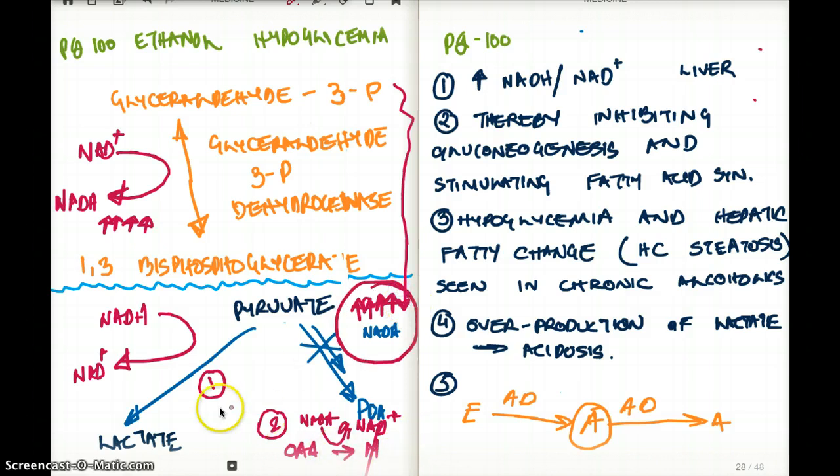So what happens if we have more of this step favored and more of that step being favored? If this step is favored, we have lots of lactate in our body. And if oxaloacetate to malate is favored, then that is going opposite TCA.